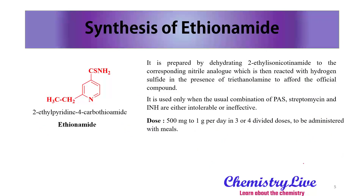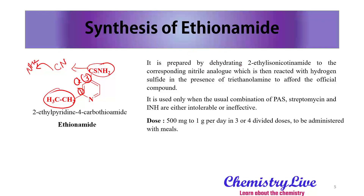The next synthesis is ethionamide, which has a very different kind of synthesis. The difference is that we need to add a CH₂CH₃ group and a carbothiamide group at a specific position. To add the carbothiamide group, we first add a nitrile group, and to add the nitrile group we use an amine group. This kind of backward analysis is called retrosynthesis. Ethionamide is prepared by dehydrating 2-ethylisonicotinamide to a corresponding nitrile analogue, which is then reacted with hydrogen sulfide in the presence of triethanolamine to give the final compound.